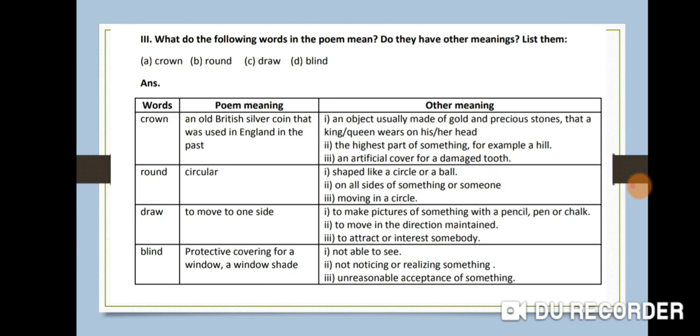For 'round': the poem meaning is circular shape. Other meanings: shaped like a circle or a ball; on all sides of something or someone; moving in a circle — for example, when we move ourselves in a circular shape, that is also called round.